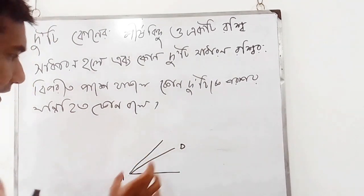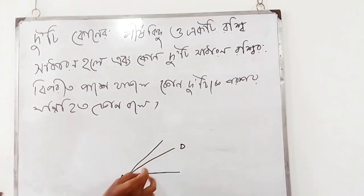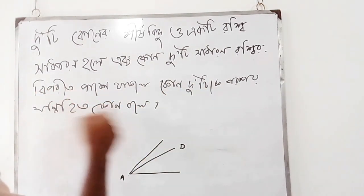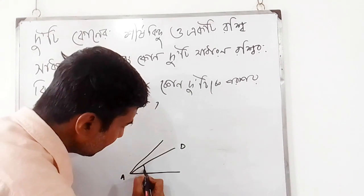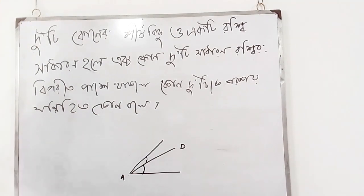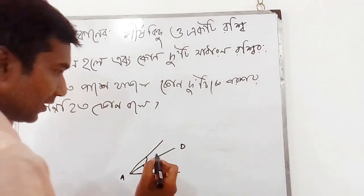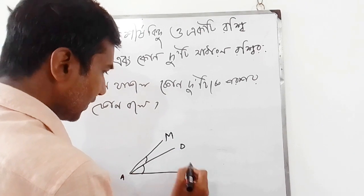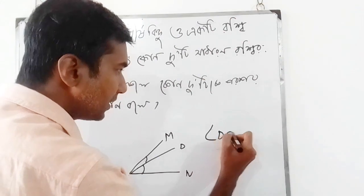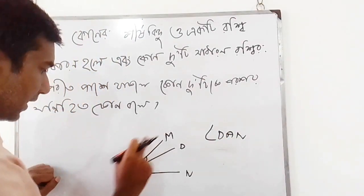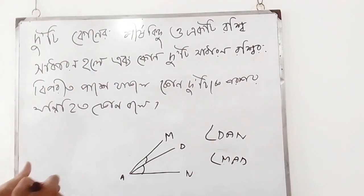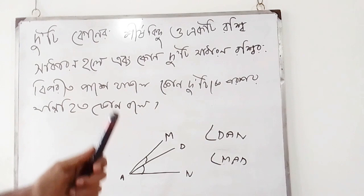This is AD. ADL is 1. 1. 2. 2. 3. 3. 4. 5. 5. 6A. 3. 5. 6. 11. 7. 8.